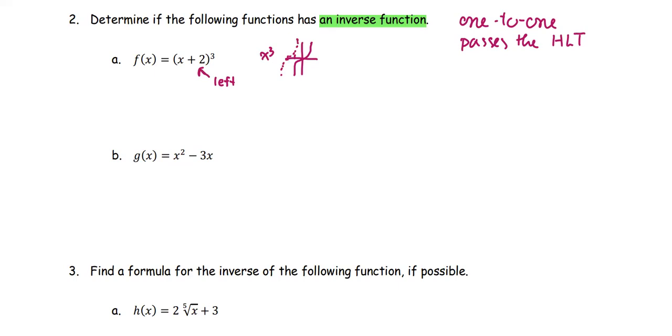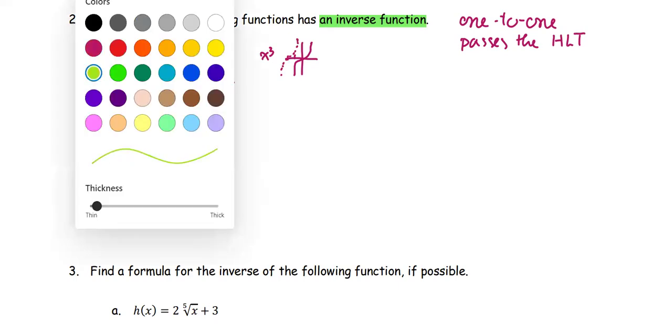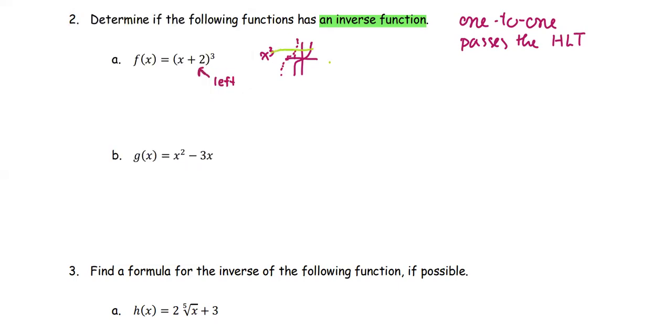So when we use the horizontal line test, go across the graph, we do not have any line that's passing more than one intersection point.